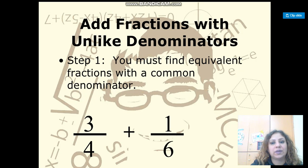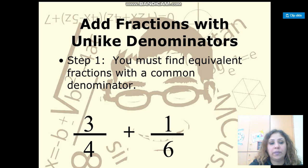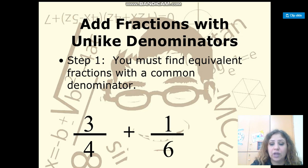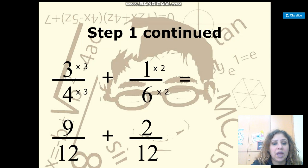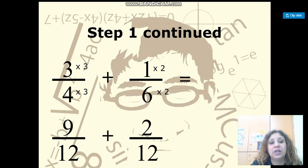Step 1: you must find the equivalent fractions for the common denominator. We need to find the LCD — the least common denominator. List the multiples of 4, list the multiples of 6, and see what number is shared. You will find that it is 12.